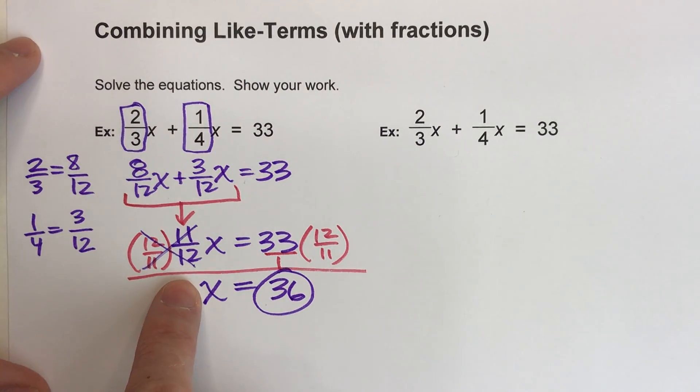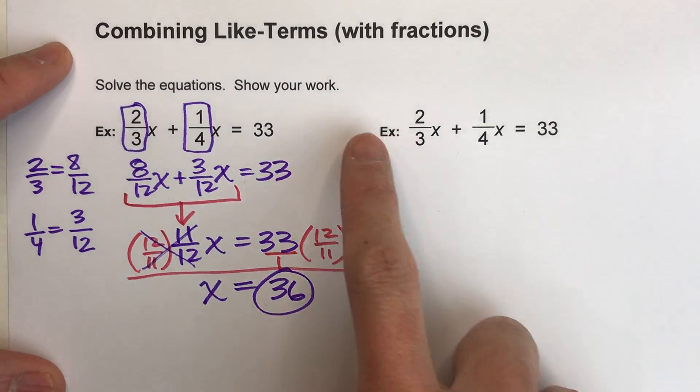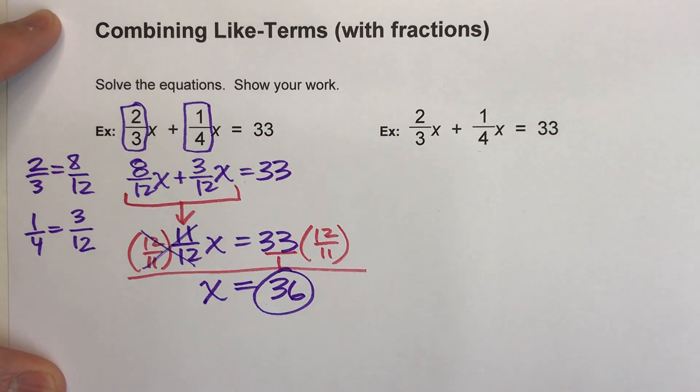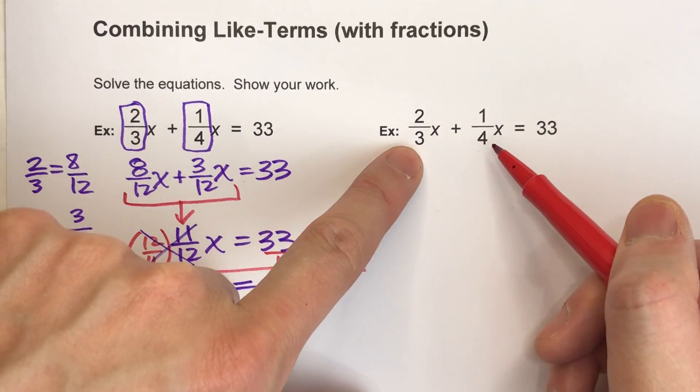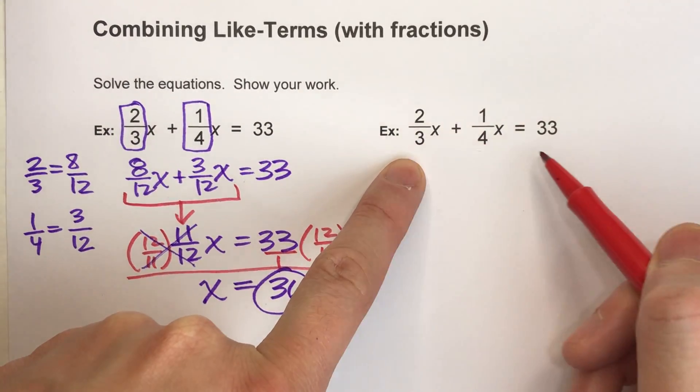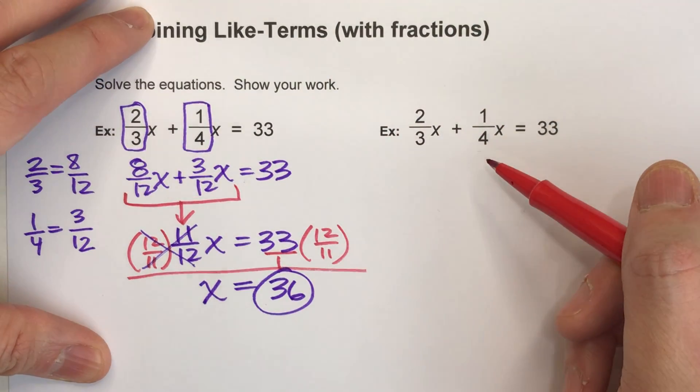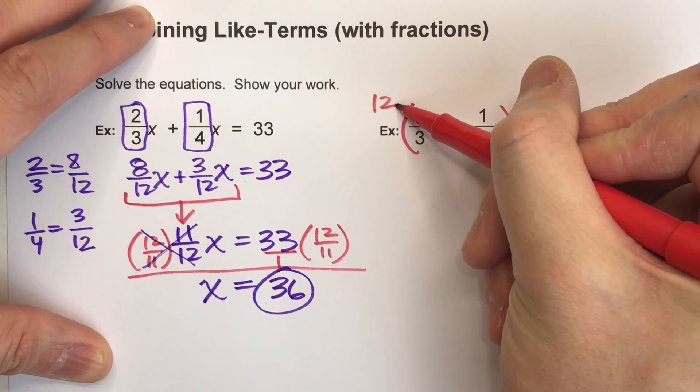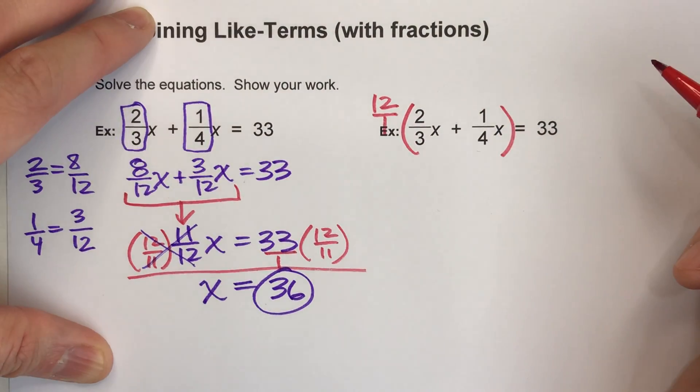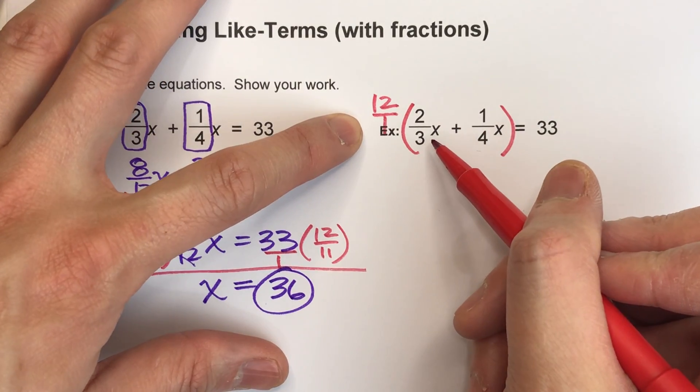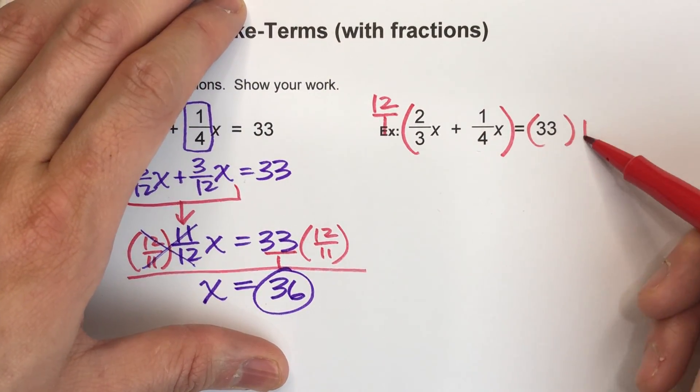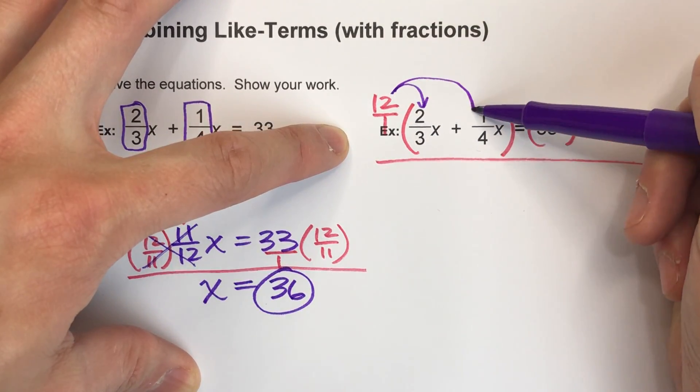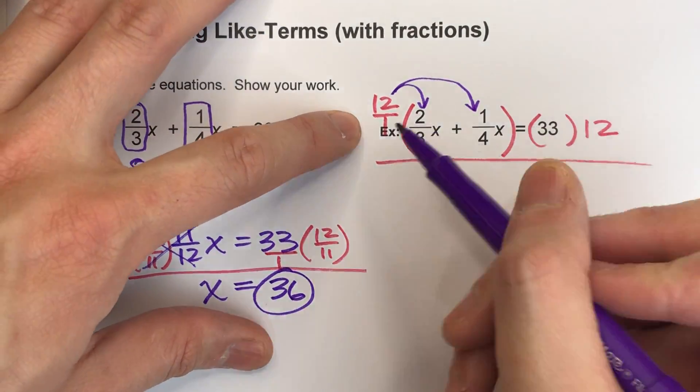Now I'm going to show you a second way that will eliminate all the fractions right from the beginning. Now the second method, what we do is, first we look at our fractions and find the common denominator, which in this case is 12. We already figured that out. But instead of changing the fractions, I'm going to multiply this whole side by 12, or 12/1, let's say. That'll make it easier for us later. But what I do to one side of the equal sign, I have to do to the other side. Now when I do this, I have to multiply everything in here times 12, so it's a little bit of the distributive property here.